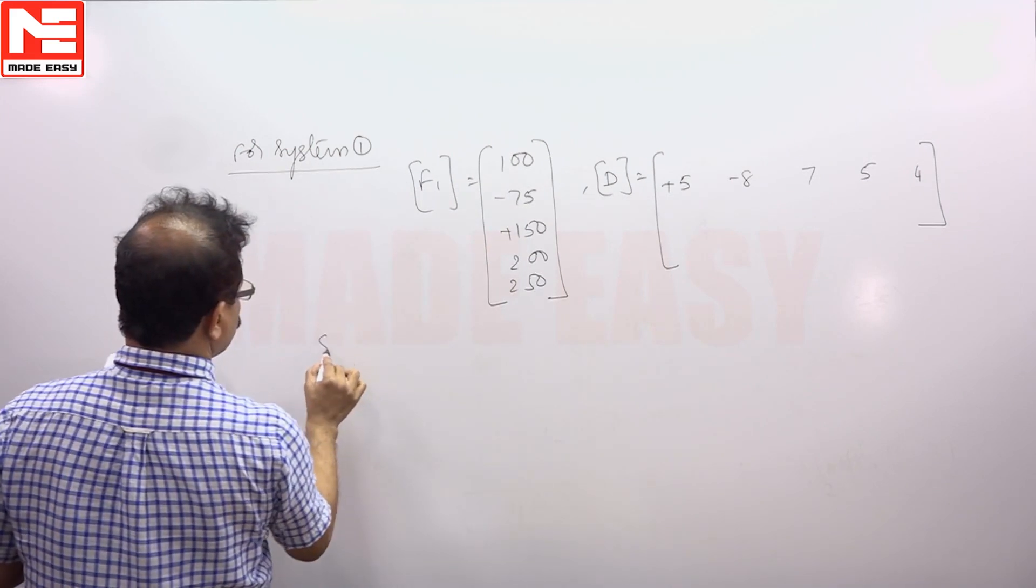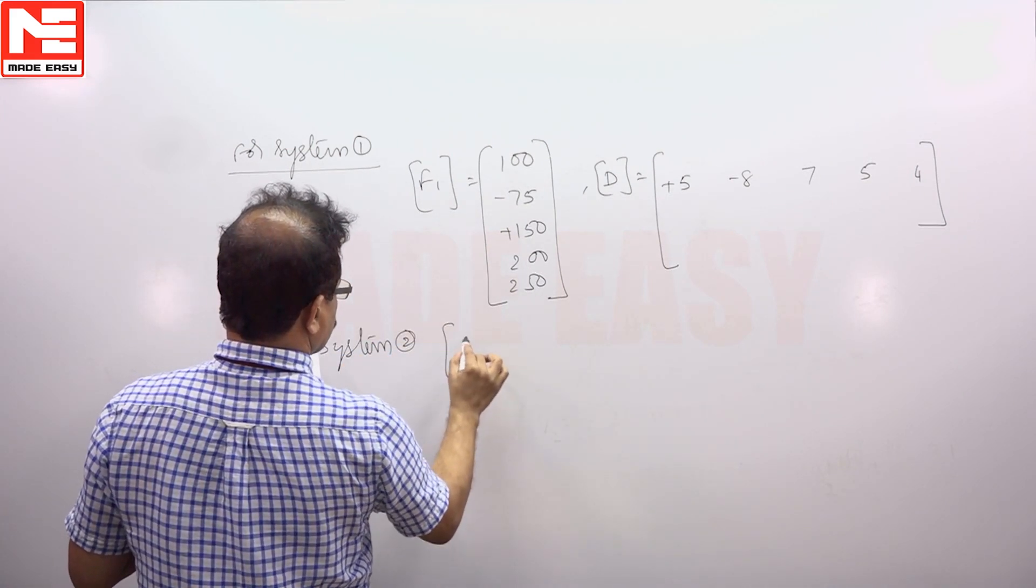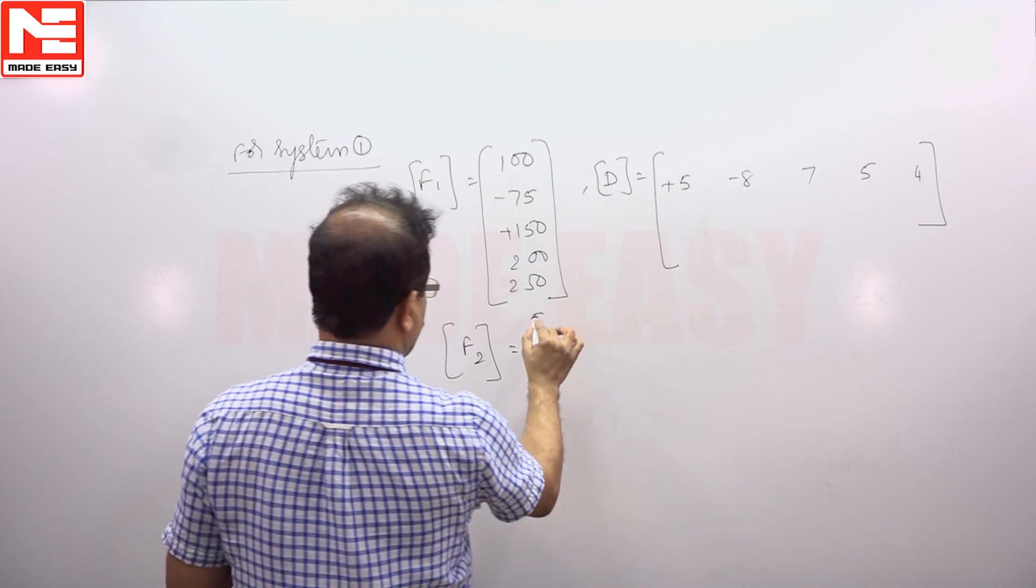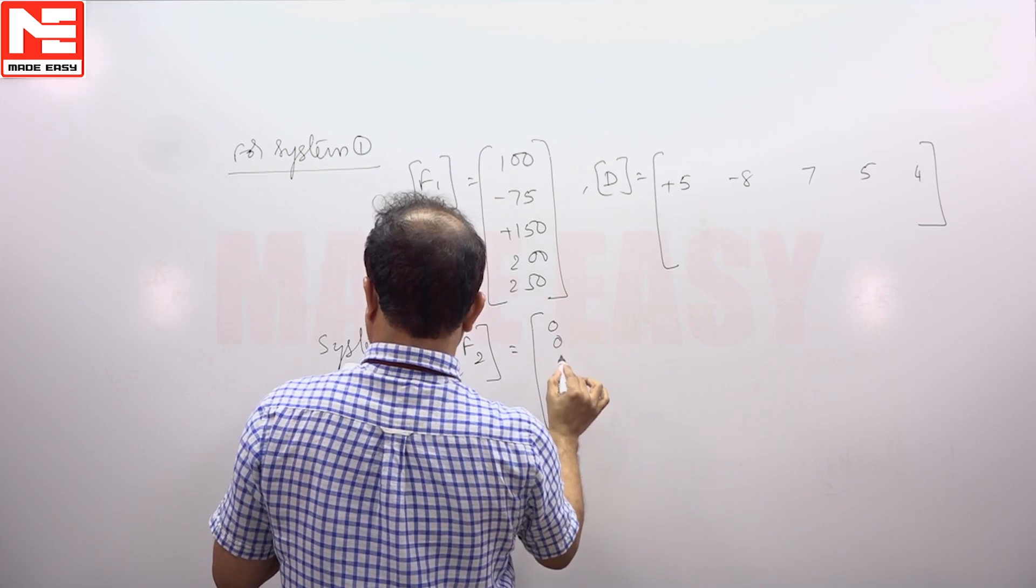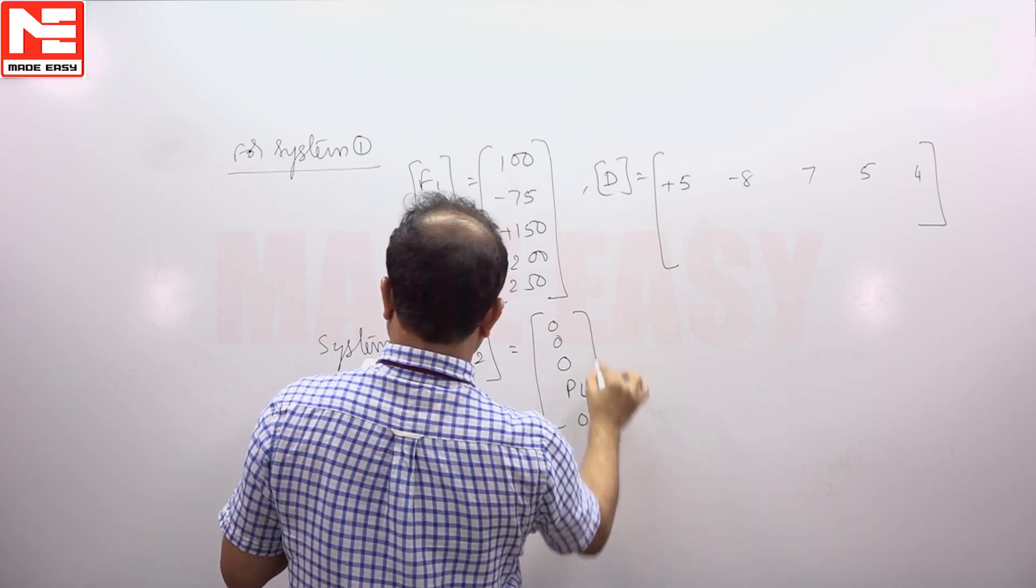Then in system 2, F2 has given only one place. Three are zero loads, only P4 has given, again zero.